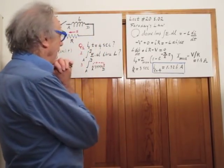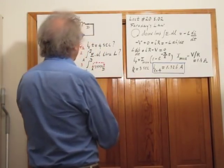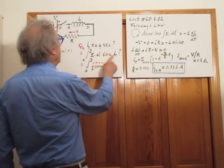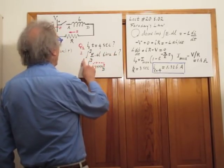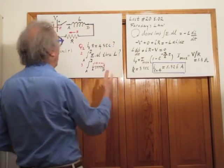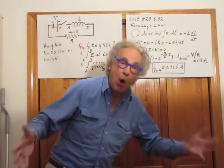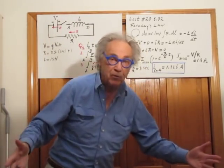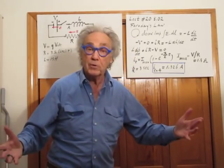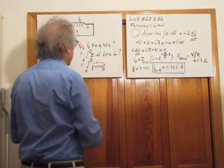Now the second question: what is the integral of E dot dl when going from A to D through the wire? Obviously that has to be zero, because there is no electric field inside the self-inductor. So that's an obvious answer — it is zero.